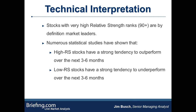In terms of the technical side of how you interpret relative strength: stocks with very high relative strength ranks — say 90 or above — are by definition the market leaders. A number of statistical studies have shown that high relative strength stocks have a strong tendency to outperform over the next three to six months, and low relative strength stocks have a strong tendency to underperform over the next three to six months — again, talking about six-month relative strength. These studies are pretty consistent on that score.